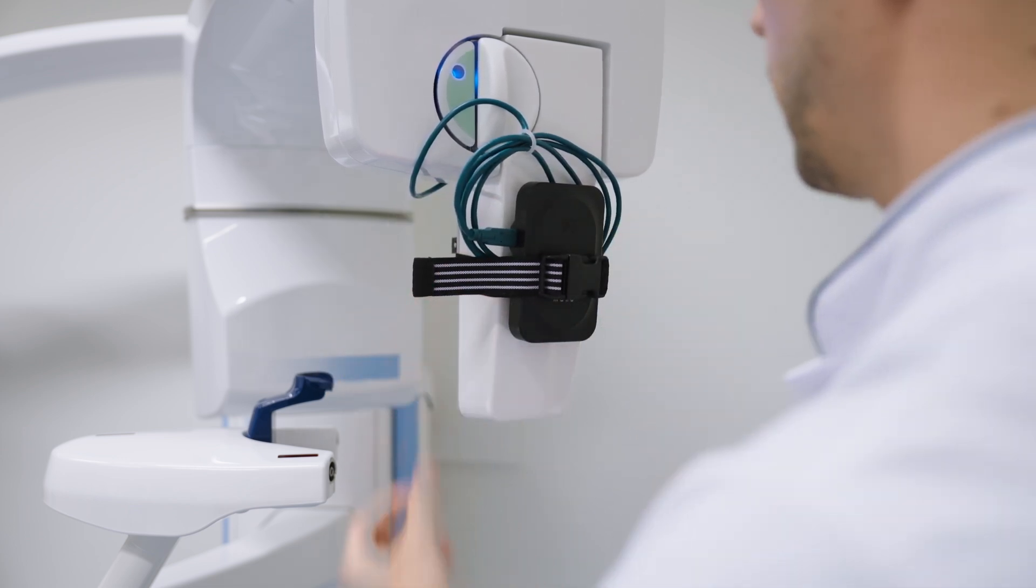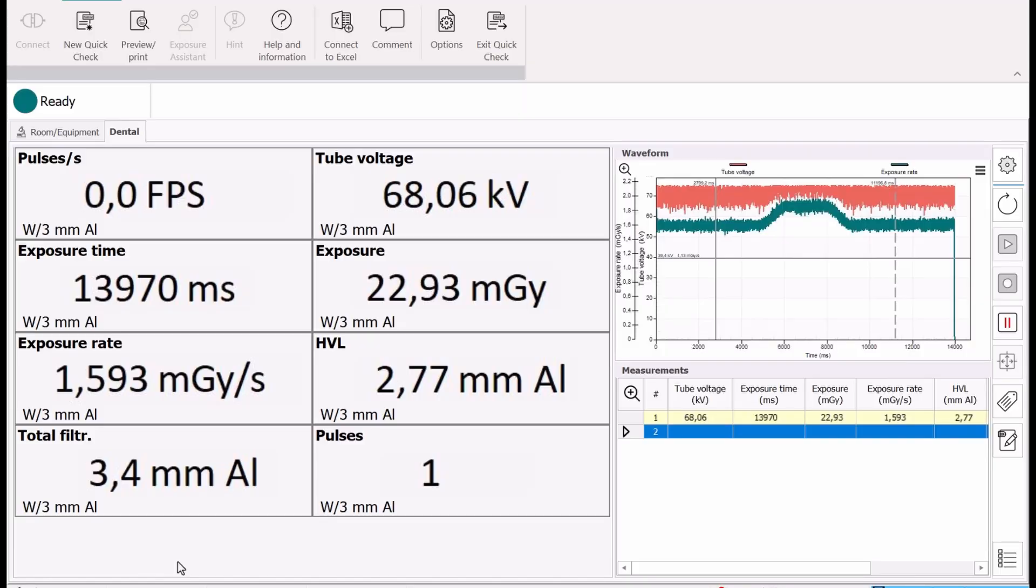Make an exposure on the x-ray system. Values for kV, dose, dose rate, exposure time, HVL, total filtration and number of pulses will be displayed automatically.